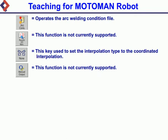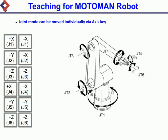Joint mode: the robot can be moved individually via axis key. X J1, X J1 Plus Y J2, X J2 Plus Z J3, Z J3 Plus X J4, X J4 Plus Y J5, Y J5 Plus Z J6, J6 Plus X J1.